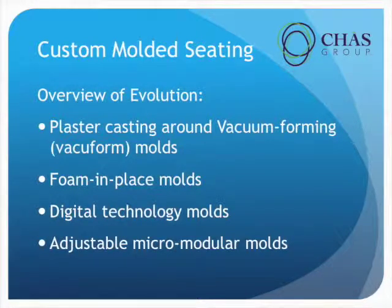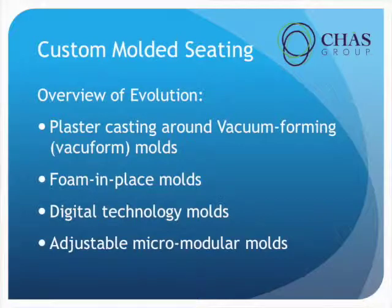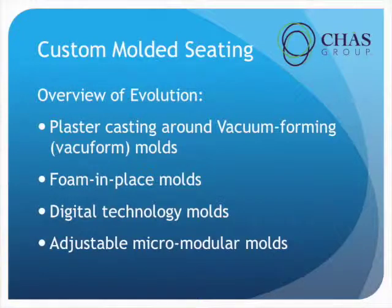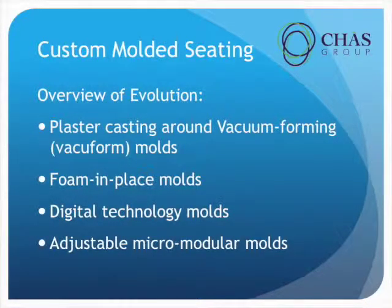The overview of the evolution of custom molded seating: the first plaster cast type molds that were introduced were the vacuum form type. The next type of seating systems introduced were foam in place, which we're still using quite a bit today, especially with some of the funding changes. Then digital technology came around, which has been wonderful — digital technology is used in both plaster and foam molding systems.